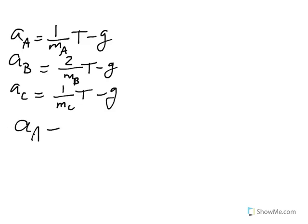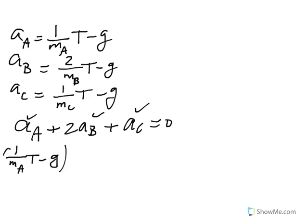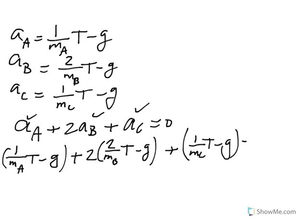Remember now, our equation is acceleration of A plus two acceleration of B plus acceleration of C equals zero. Go ahead and plug in acceleration of A, B, and C. So we have one over mass of A times tension minus G. That's acceleration of A plus two times acceleration of B. That is two over mass of B, tension minus G. And finally, acceleration of C, one over mass of C times tension minus G equal to zero.